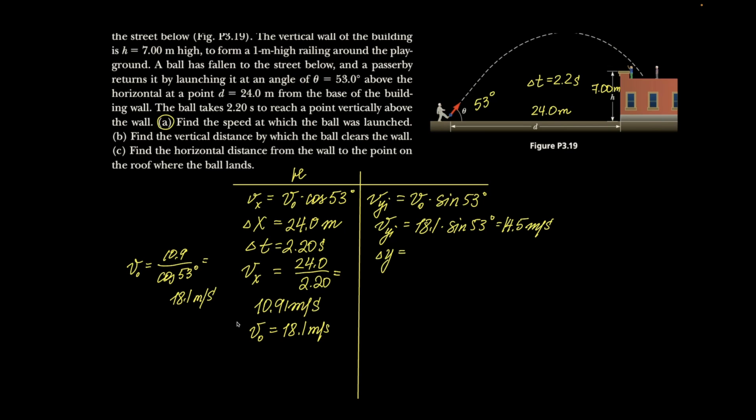So then, since I'm figuring out the vertical position of the ball, I'm going to use 14.5 times 2.2, because that's how long it took to get to the wall, minus 9.81 over 2 times 2.2 squared. That gets me 8.06.